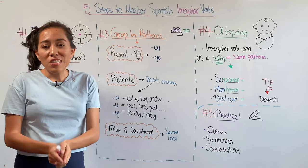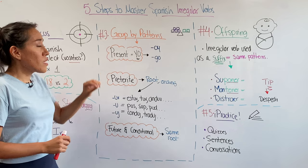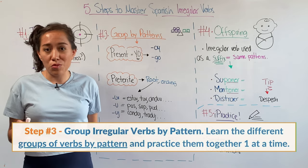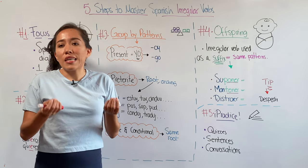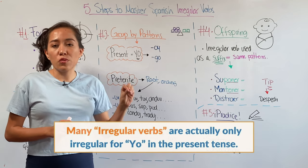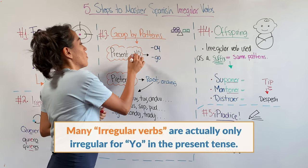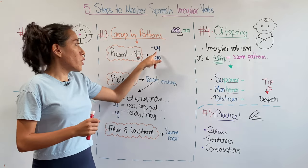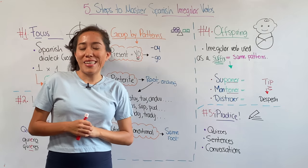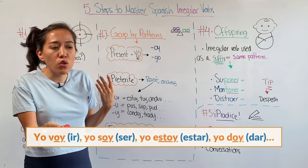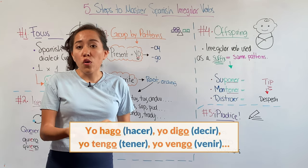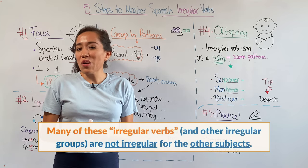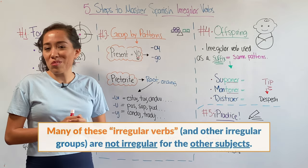Step number three, and pay attention because this one is really important: group irregular verbs by patterns. Irregular verbs seem like they don't follow any rules, but they actually do. Let's take the present tense as an example. Many irregular verbs are going to affect yo, and this effect is going to impact the endings. We have verbs that end in -oy or verbs that end in -go. For example: yo voy, yo soy, yo estoy, yo doy; yo hago, yo digo, yo tengo, yo vengo. Many of those irregular verbs for yo are not going to be irregular for the other subjects.